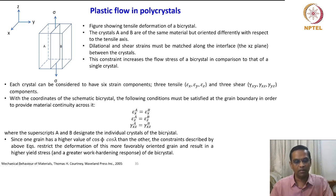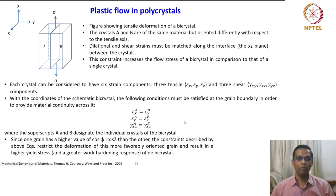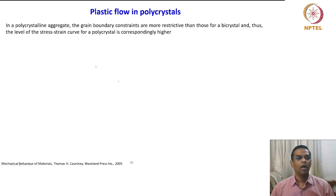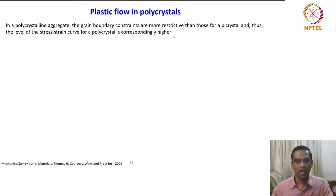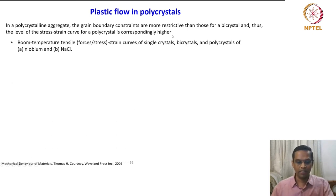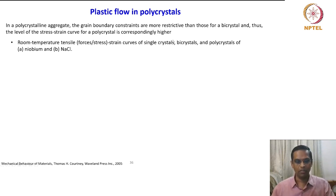This is one nice example to appreciate what grain boundary constraint is. In a polycrystalline aggregate, the grain boundary constraints are more restrictive than those for a bicrystal, and thus the level of the stress-strain curve for a polycrystal is correspondingly higher. Now we expect different stress-strain responses for a single crystal and a polycrystal, and we will go through some examples.